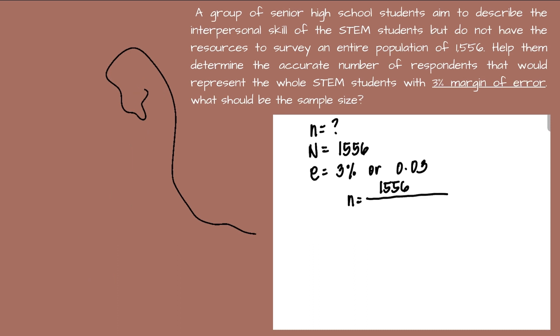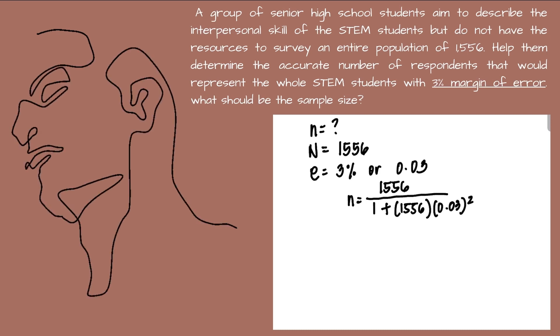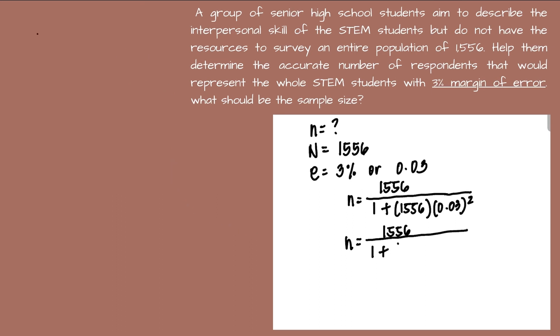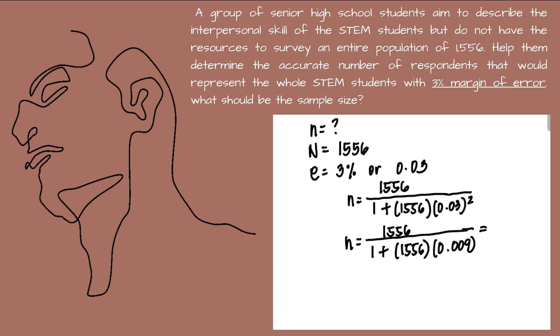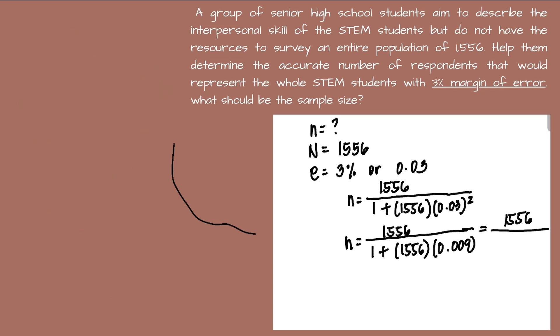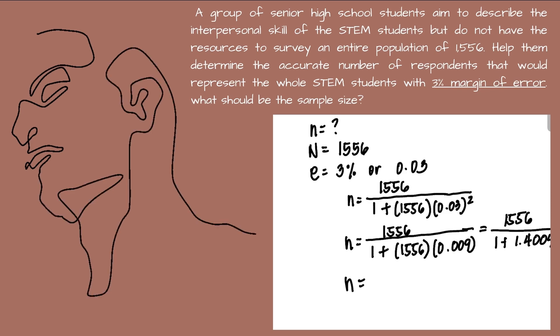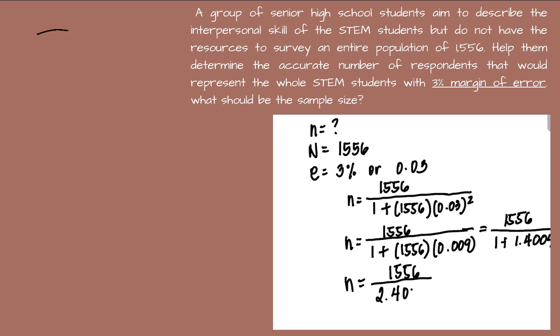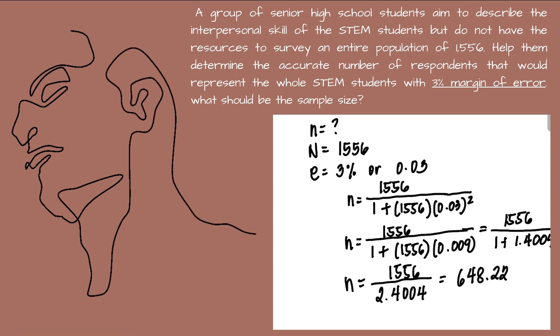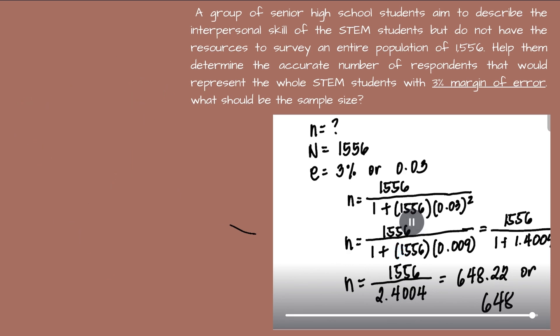Substitute the given to the formula. We will have n equals 1,556 all over 1 plus 1,556 multiplied by 0.03 squared. Simplify. Unahin muna natin yung 0.03 squared, so we could have 0.0009. Then multiply 1,556 over 0.0009, so we will have 1.4004 plus 1. We will have 1,556 all over 2.4004. Divide, then we will have 648.22 or 648 persons.